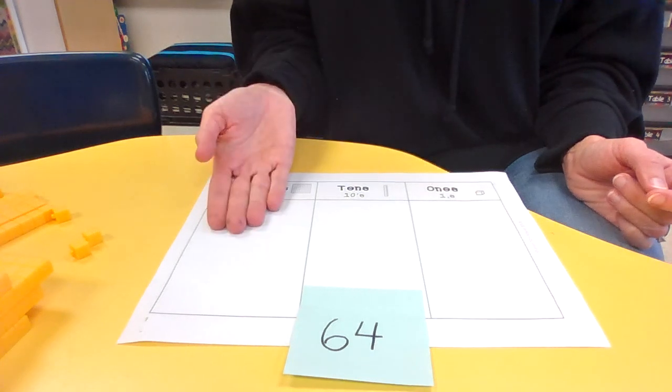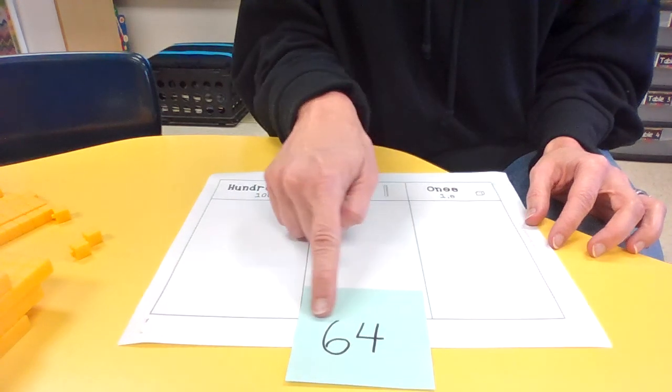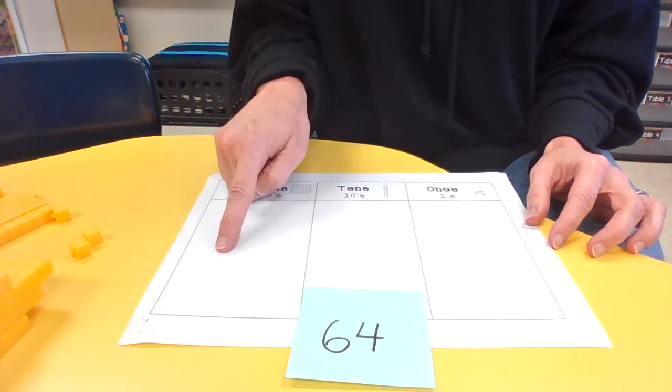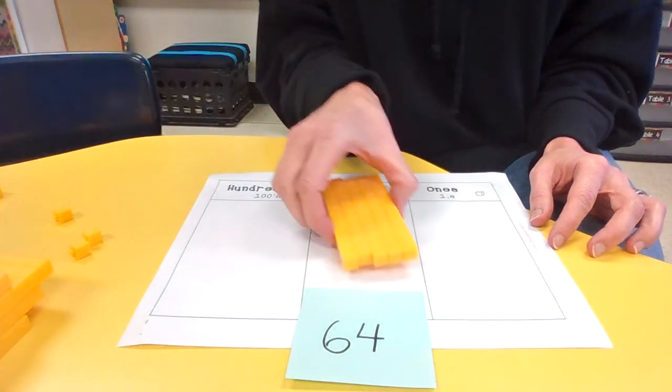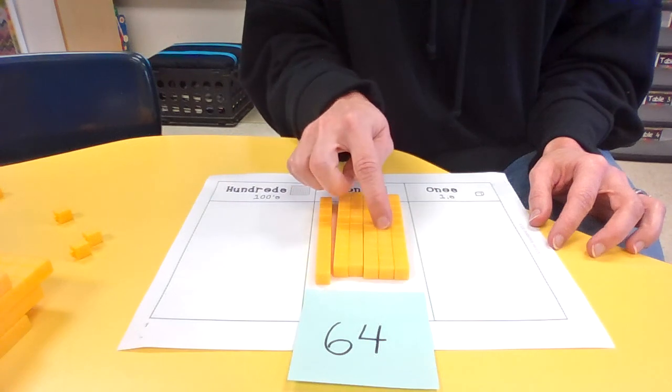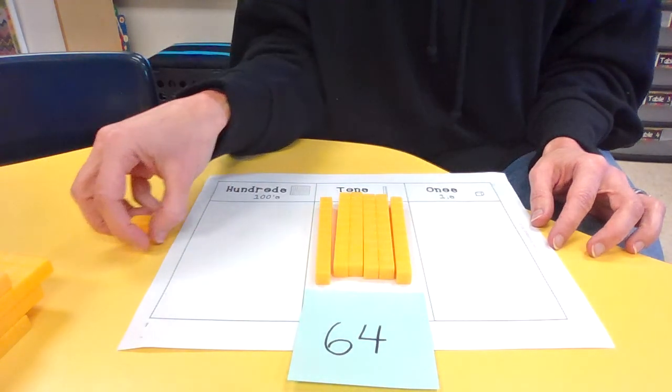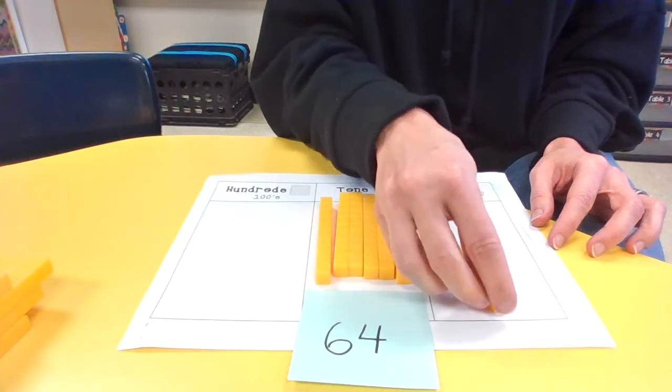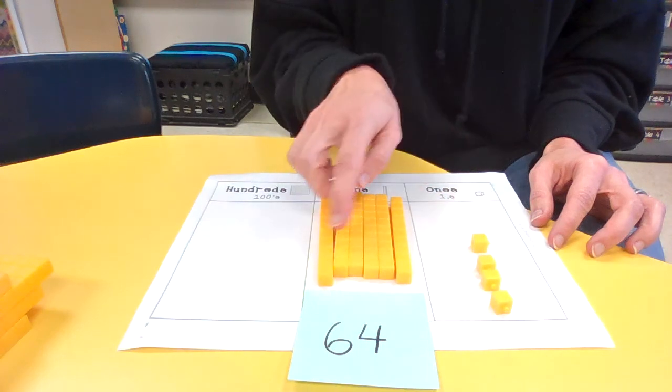All right, anything in the hundreds place? Do you see anything there? Is there a third digit? Nope, nothing there. So let's start here in our tens place. 10, 20, 30, 40, 50, 60. And we have 4 in our ones place. Sometimes I like to line those up. 1, 2, 3, 4, 64.